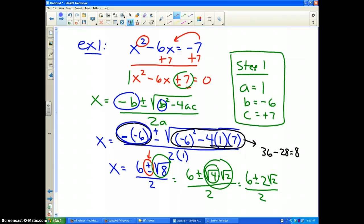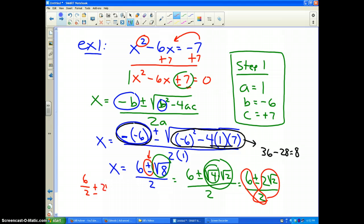Finally, I break it apart. That number is divisible by 2, and that number is divisible by 2. So I'm going to write it as 6 divided by 2 plus or minus 2 square roots of 2 divided by 2. And these 2's will cancel, and 6 divided by 2 is 3.